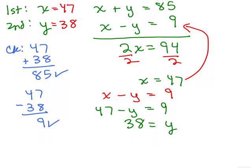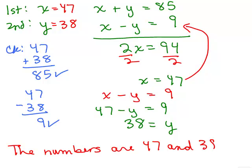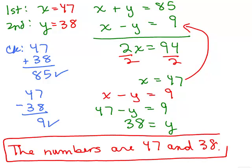So what's the answer? The numbers are 47 and 38. There's just two numbers. There's no order to it. It didn't ask you which was the smallest, the largest. Remember not to leave your answer as x equals and y equals.